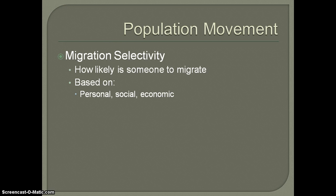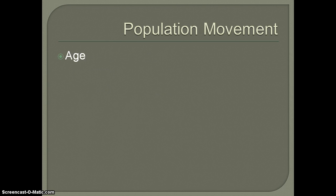People who don't have extended families in the area are much more likely to move than those who do. The less ties you have to a place, the more likely someone is going to move. When we look at migration selectivity, we find that age is going to be the best indicator of who is most likely to migrate. Typically, people between the ages of 18 and 30 are the ones most likely to move.